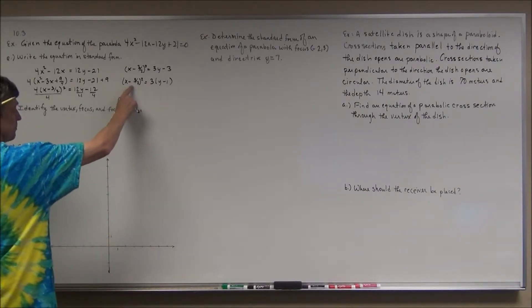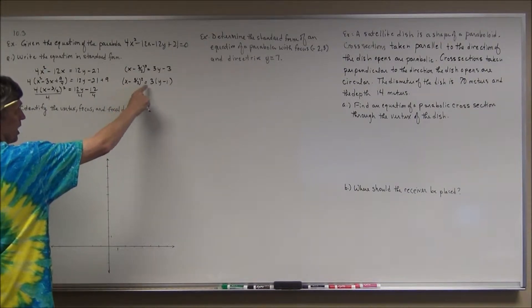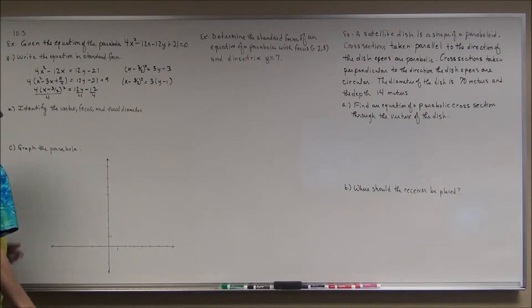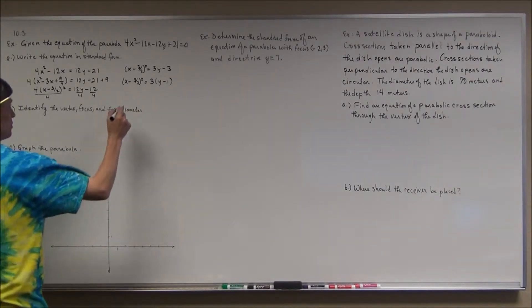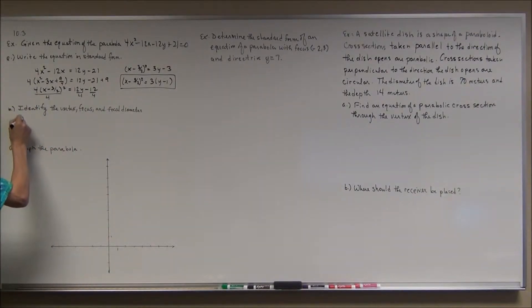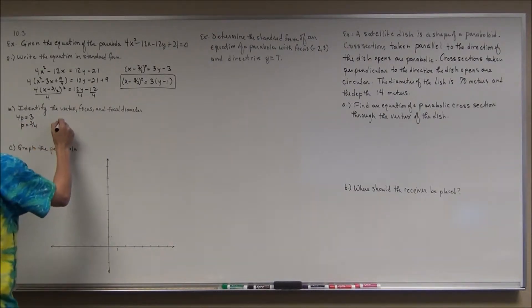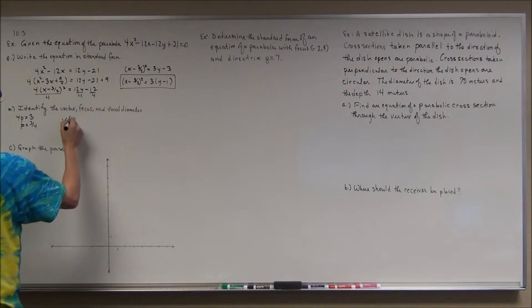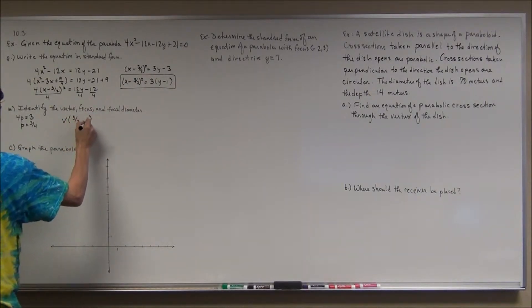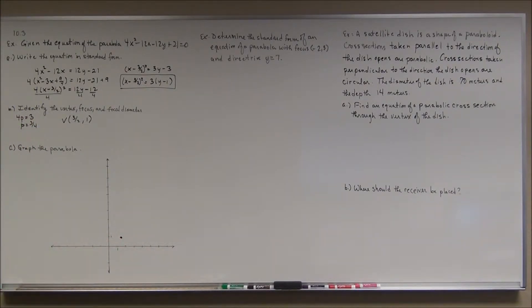I can see it opens upward because x is being squared, meaning it opens either upward or downward, and 4p is positive so p is positive. That tells me 4p equals positive 3, so p equals three-fourths. The vertex is at (three-halves, 1).